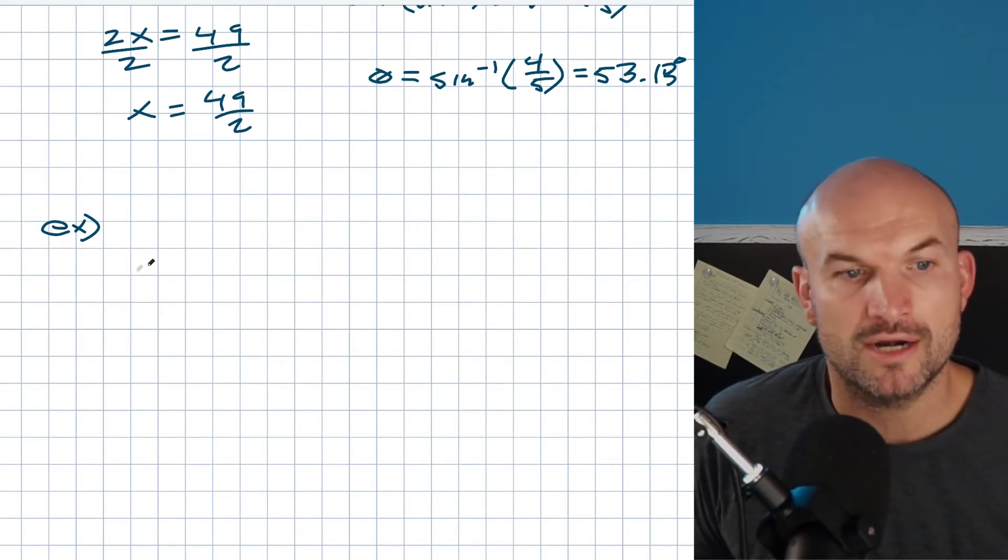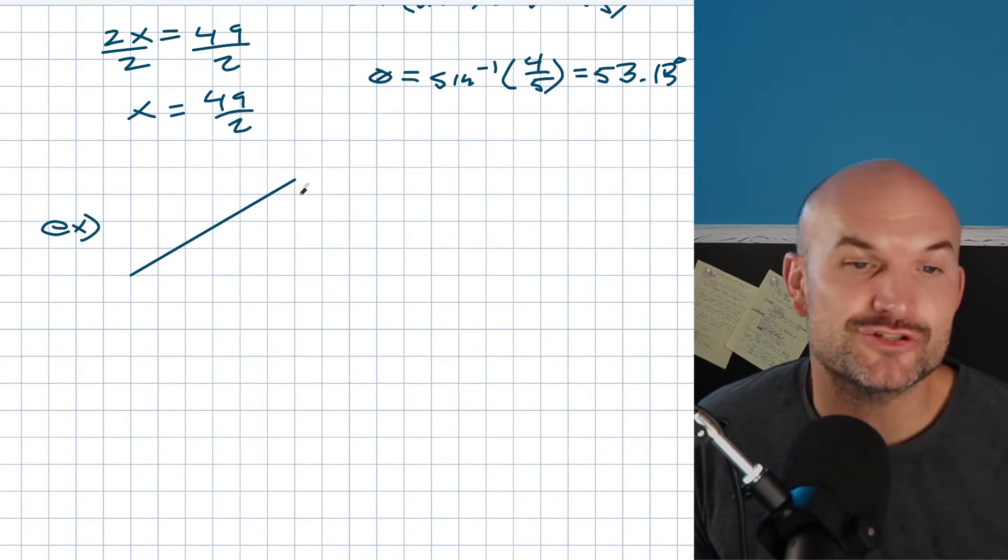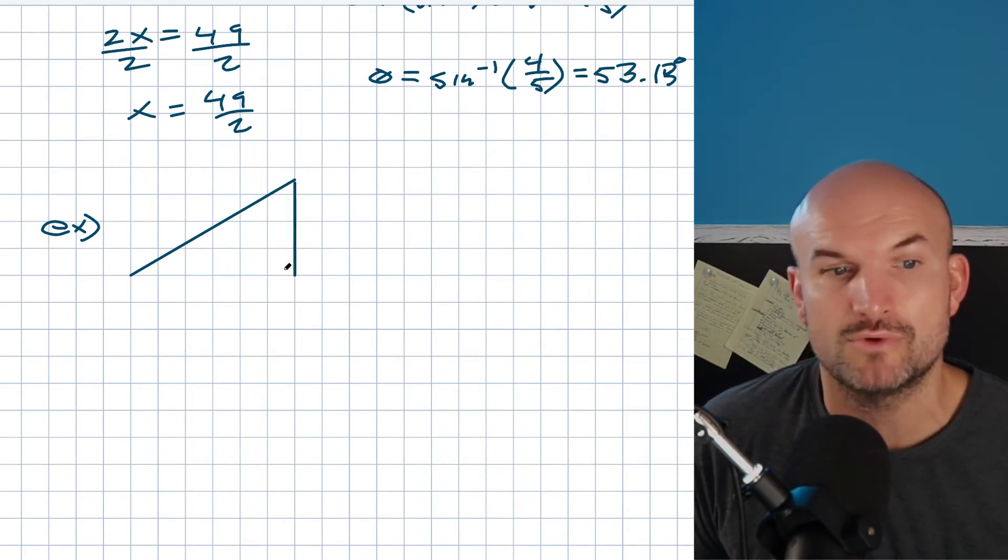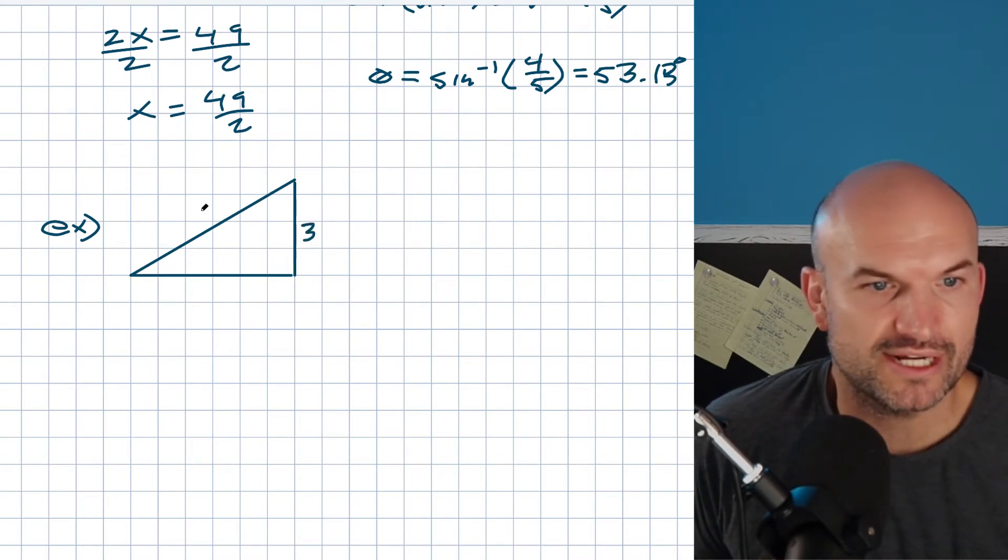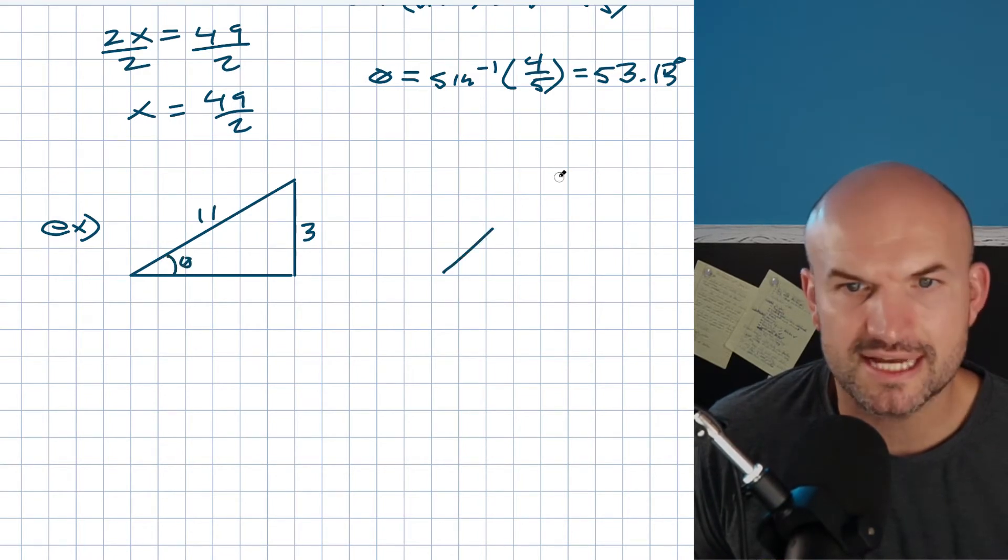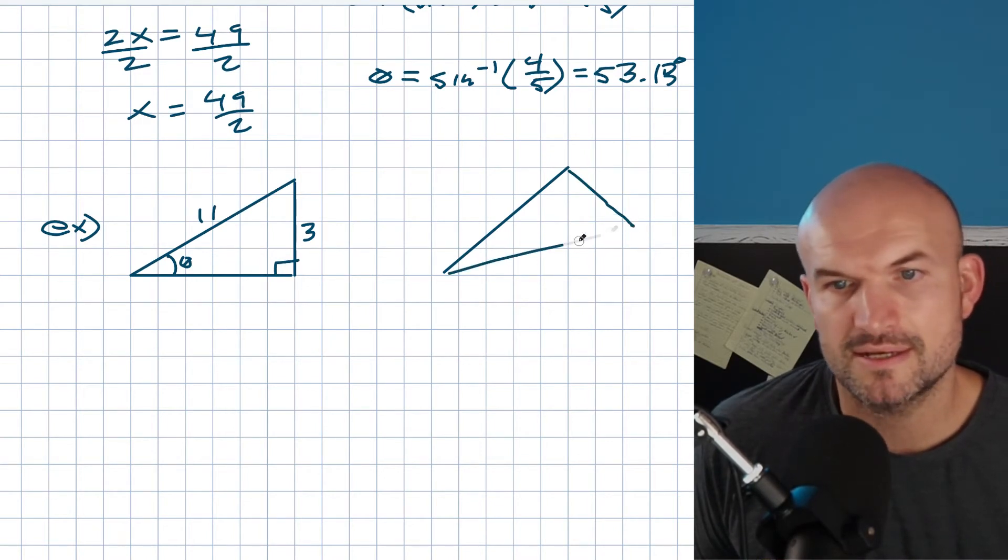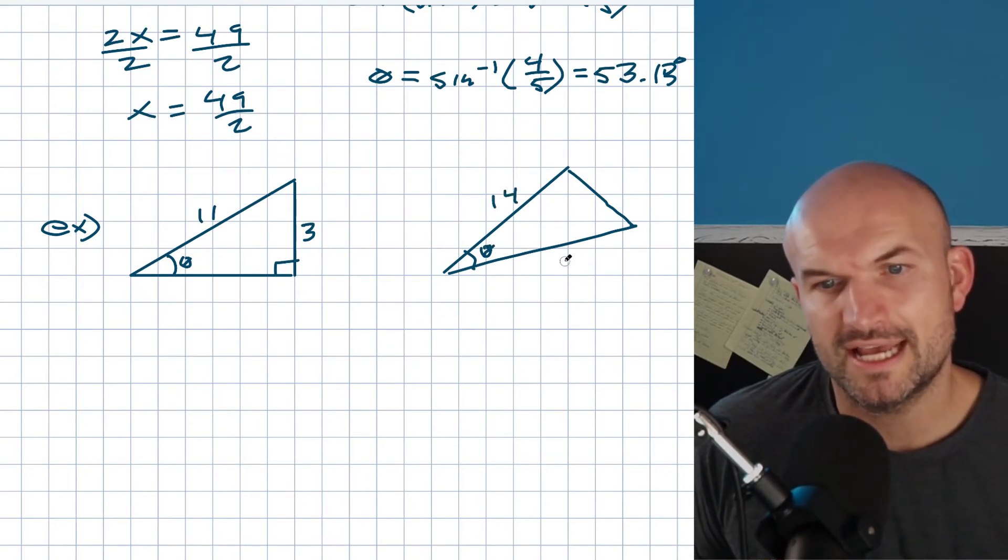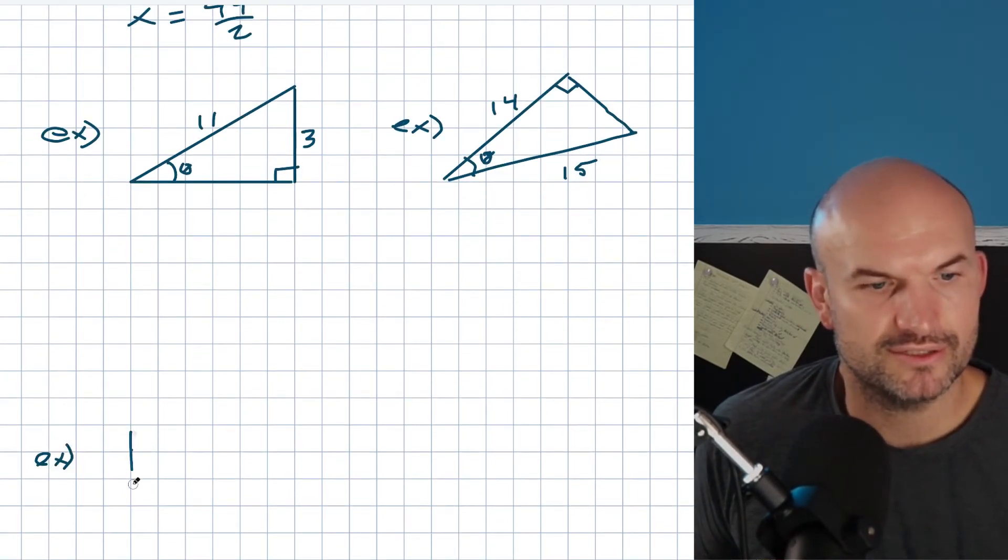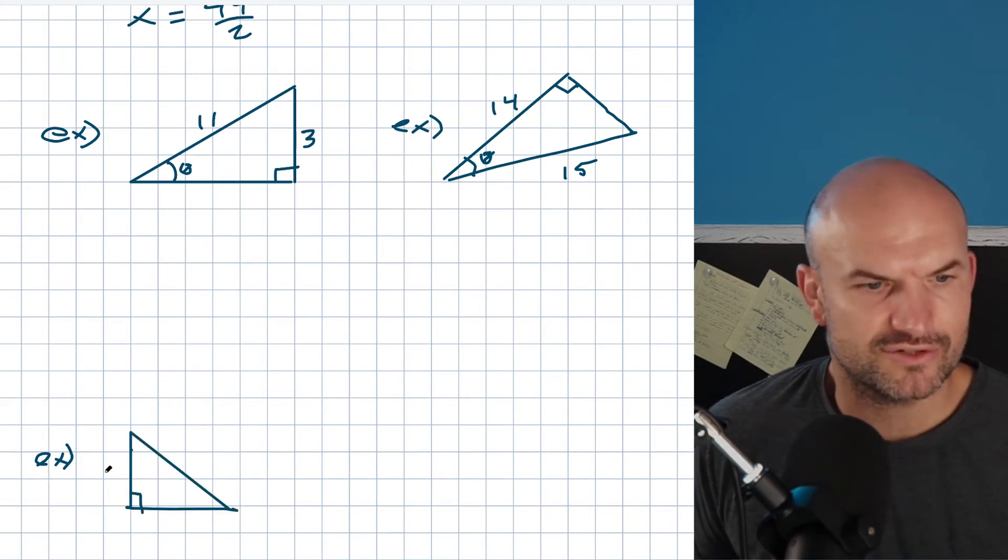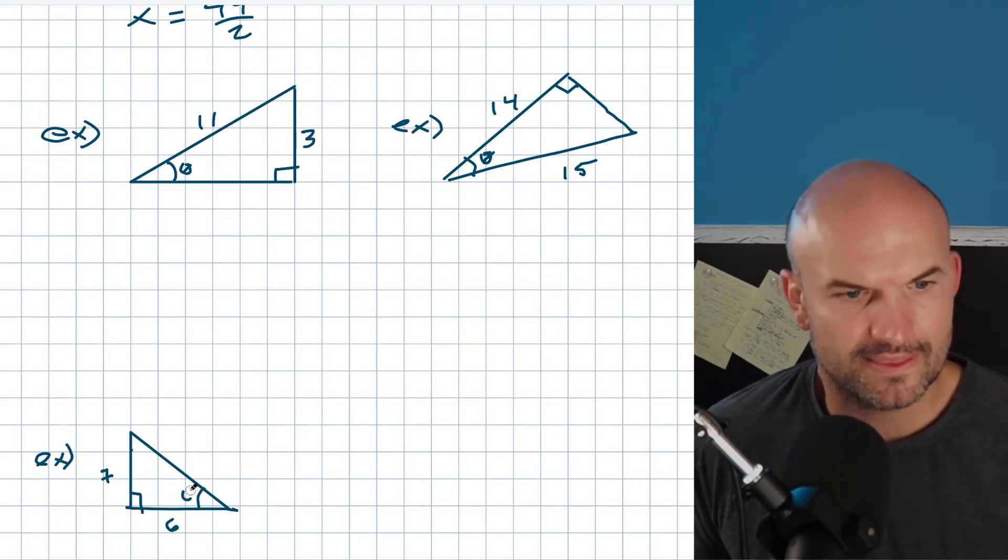When we have a right triangle we can use these trigonometric functions not only to find the missing sides when we're given a side and an angle, but we can also find the missing angles. Let's say this is 3 and 11 and let's say I wanted to find this angle. Let's make sure it's a right triangle. Let's say we have a triangle, here's my angle theta. Let's say this is going to be a 14 and that's going to be a 15. And let's do one where we have maybe a triangle, let's do the 6, 7, 8 triangle and let's give us this one here.